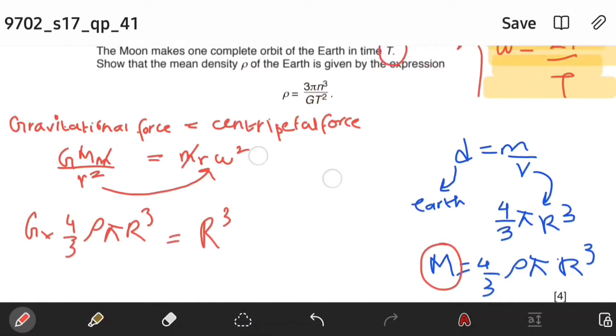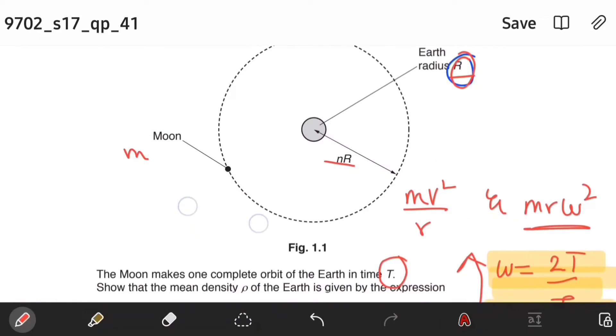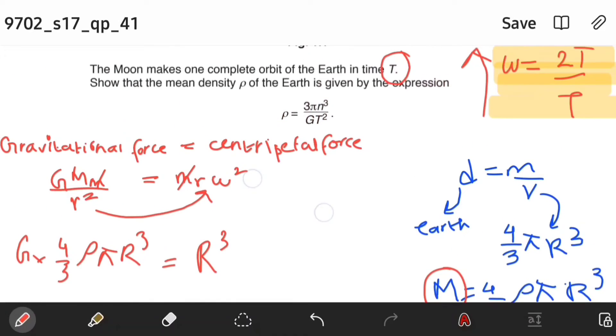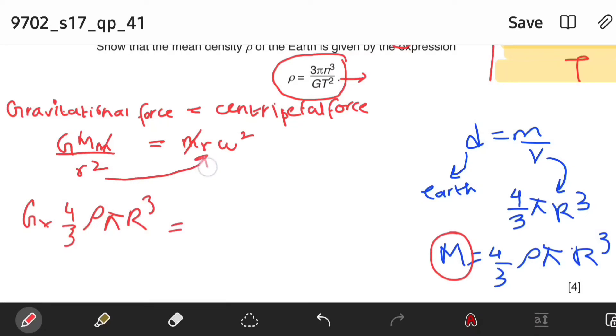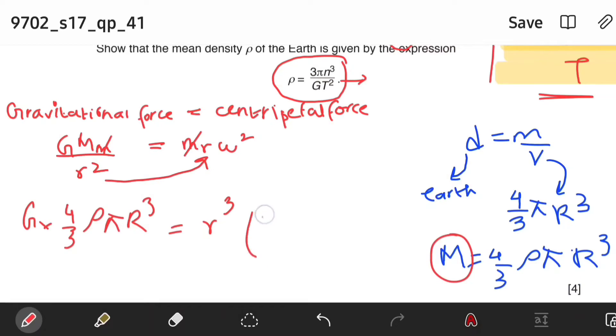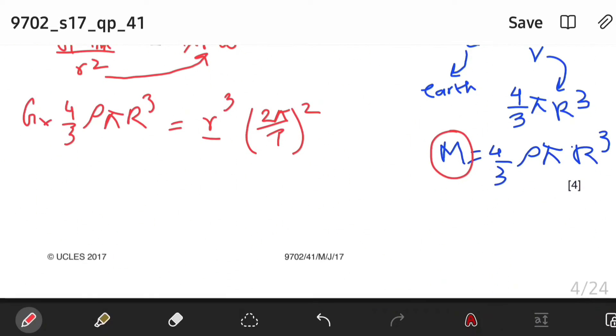First, it is going to be G into 4 over 3 rho pi R cube. We are going to cancel the small m's, which are the masses of moon. Transfer this r squared to make it R cube. Omega we are going to convert, because there is no omega in the final expression, so you need to get rid of everything that is not present there. This r is the distance between the centers of earth and the moon, which is nR.